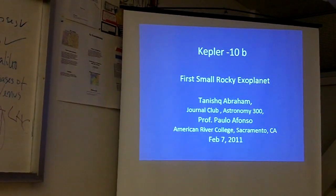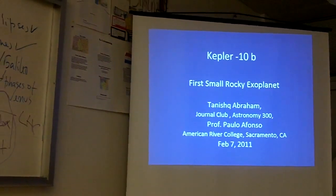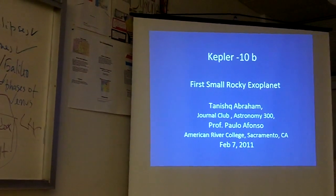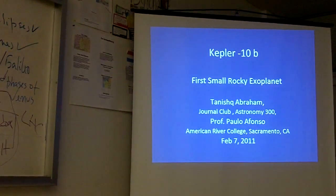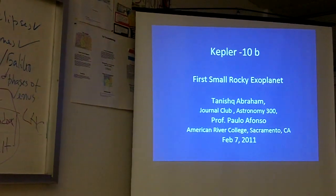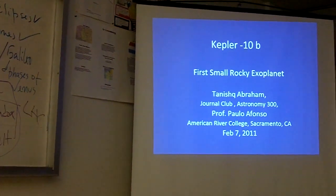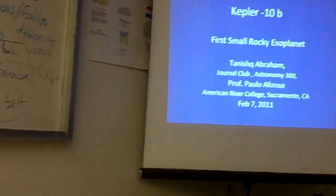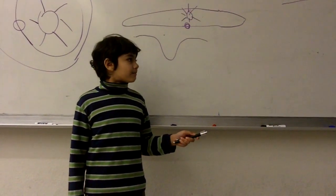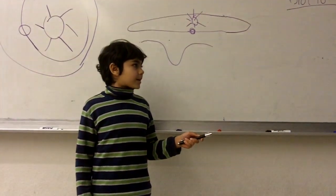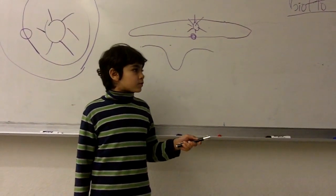There are other confirmed rocky planets, but this one has more kind of details — they know the composition more. The others are kind of, some people still have doubts. Some other exoplanets were found by NASA's Kepler Telescope and also by the Keck Observatory.